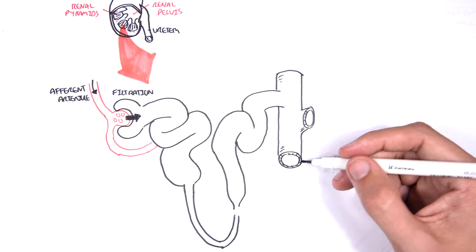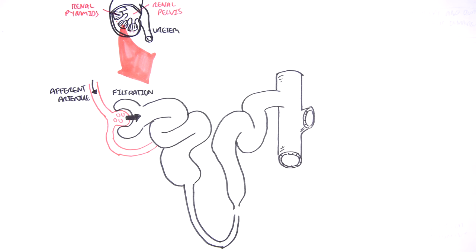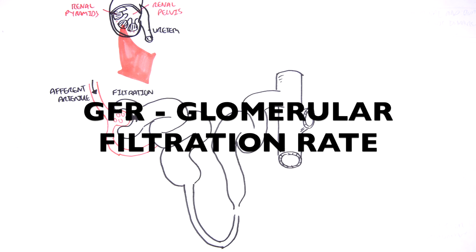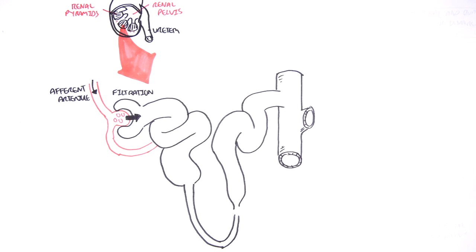And this occurs in the Bowman's capsule, the head of the nephron. A term to know is the glomerular filtration rate. And this is literally the rate at which the glomerulus filters the blood.